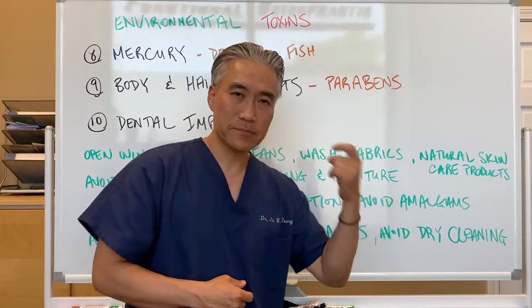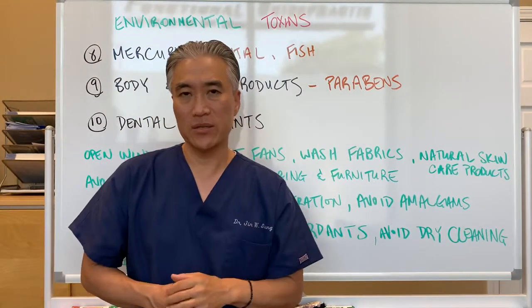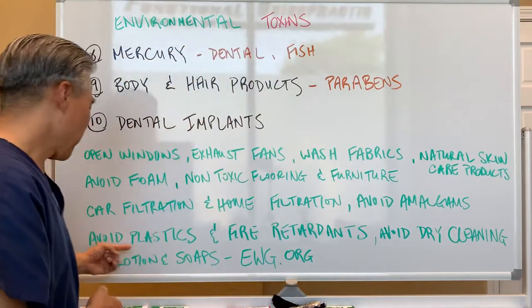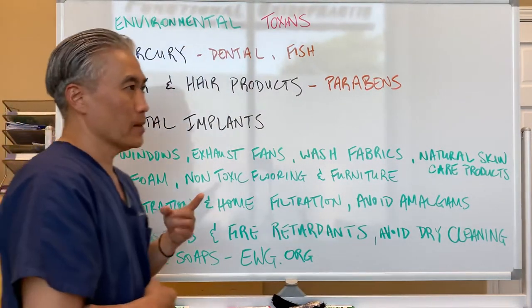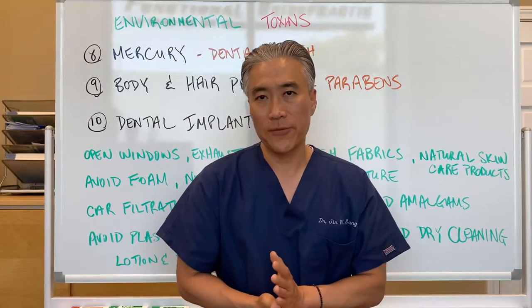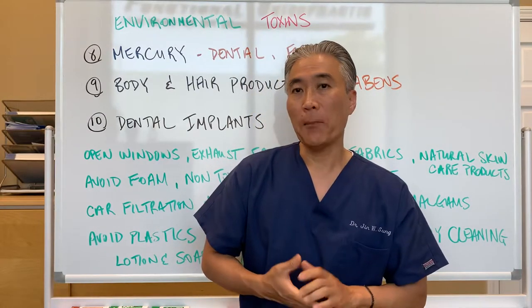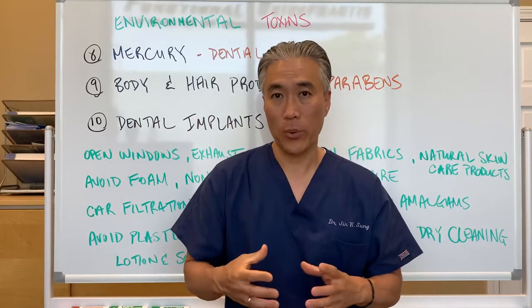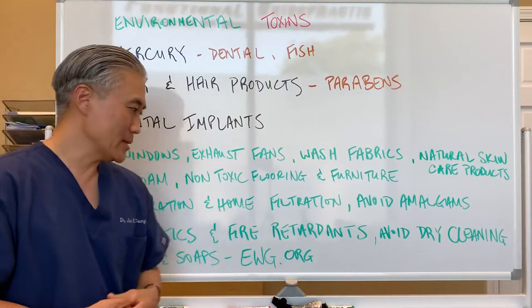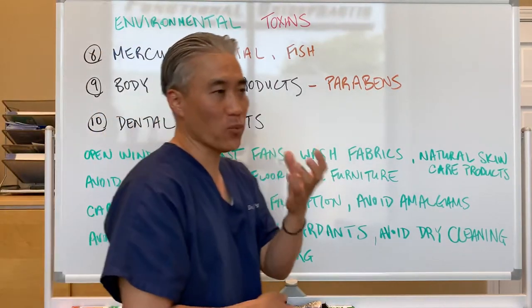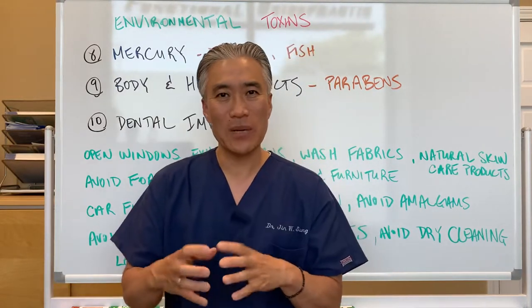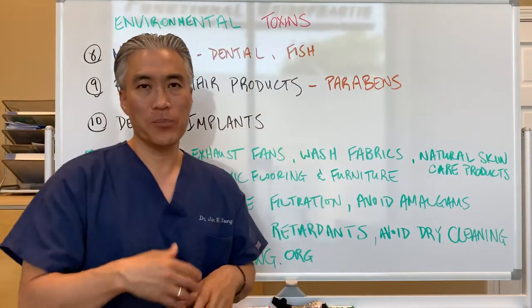Avoid amalgams — the silver fillings in your mouth. There are other composites that can be used that are less toxic to your system. Avoid plastics: don't cook with plastic, don't store hot beverages in plastic, don't use styrofoam cups, and do not microwave plastic Tupperware. Plastics will leach, especially with heat. Don't leave plastic water bottles in your car in the summertime — it heats up and starts to leach bisphenol A into the water.